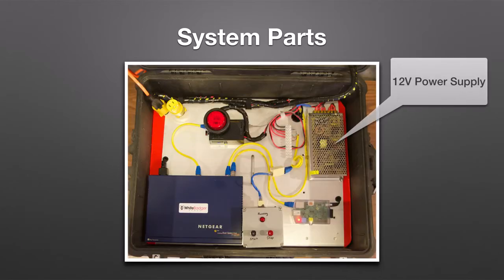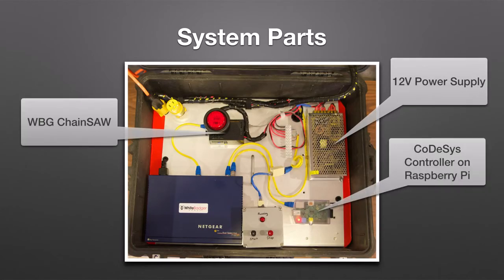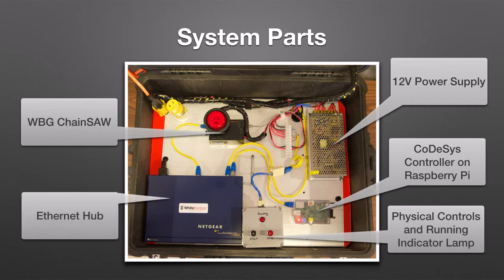On the bottom half, we have a power supply, code assist controller, hand controls, an ethernet hub, and of course the WBG Chainsaw.